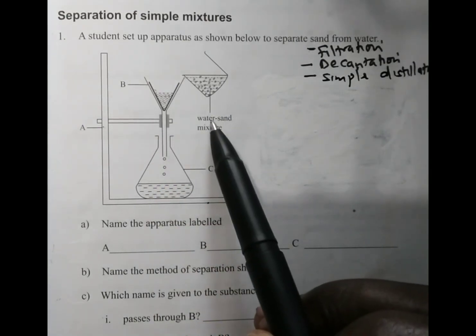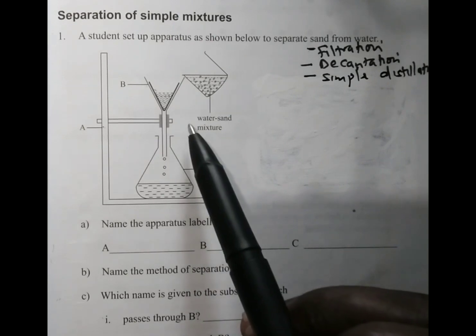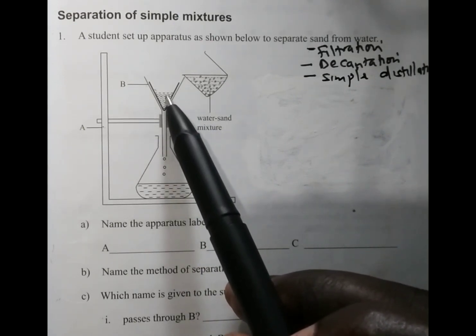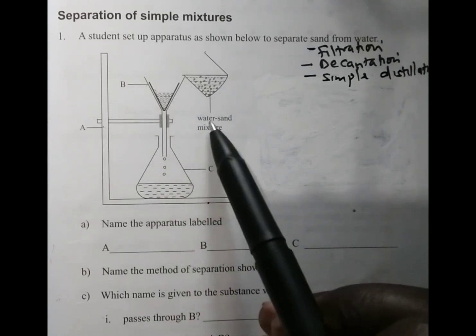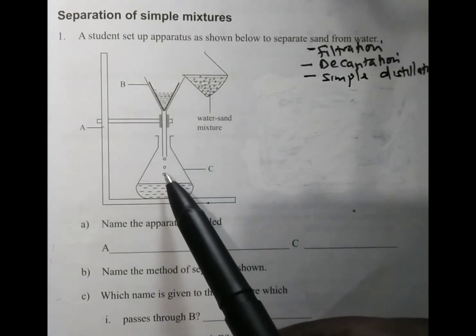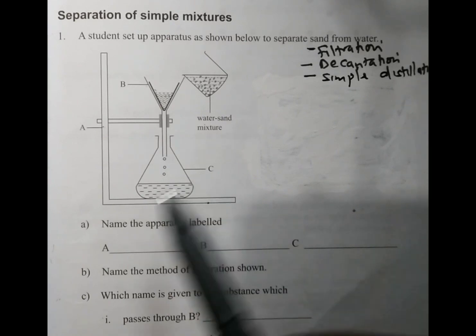We have water-sand mixture. Then of course we put it on the filter paper. The filter paper will hold the sand and water will pass through the filter paper into the container C.